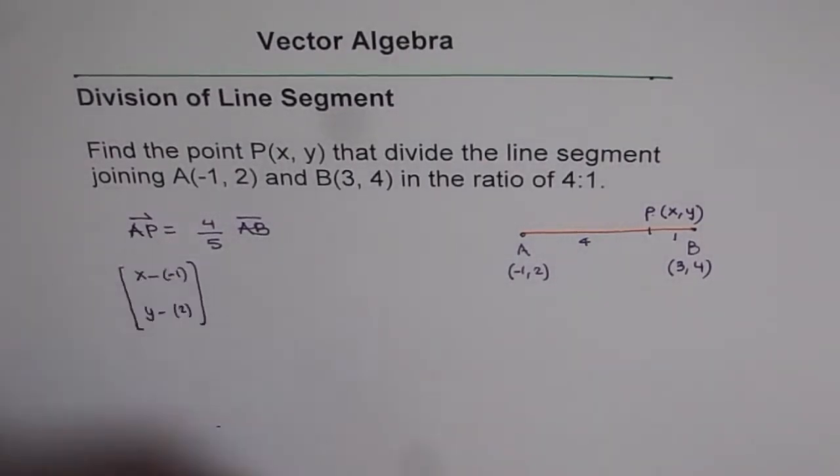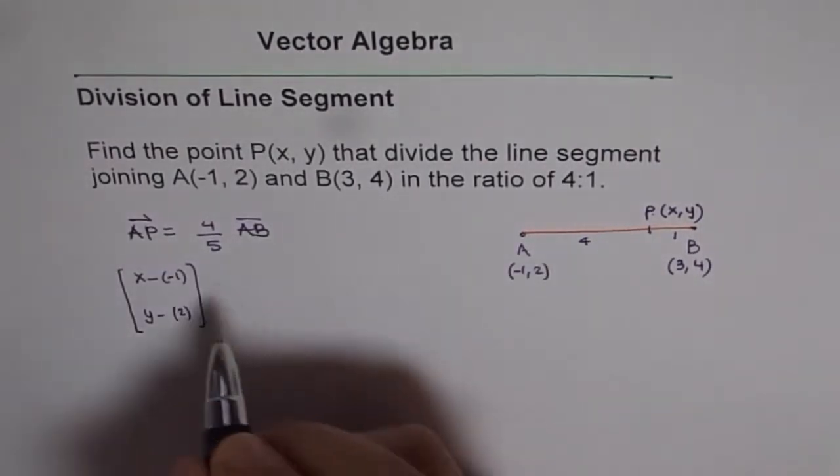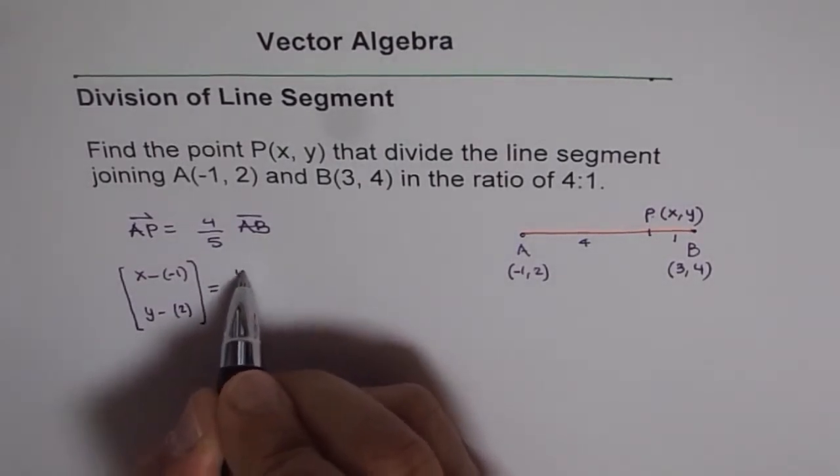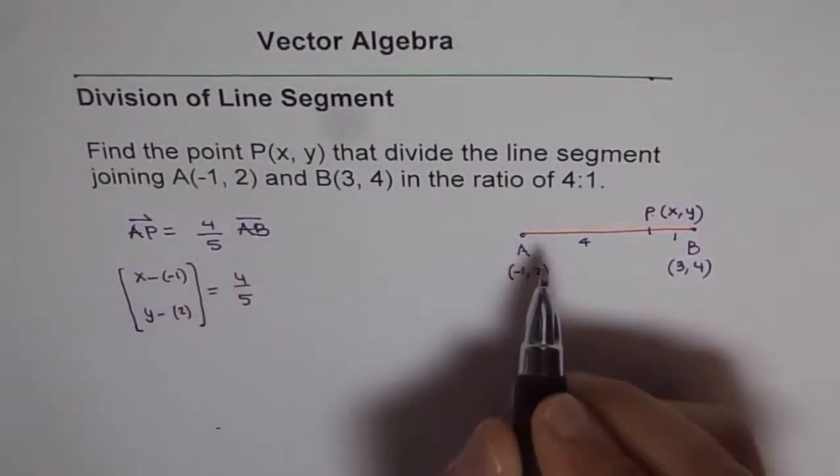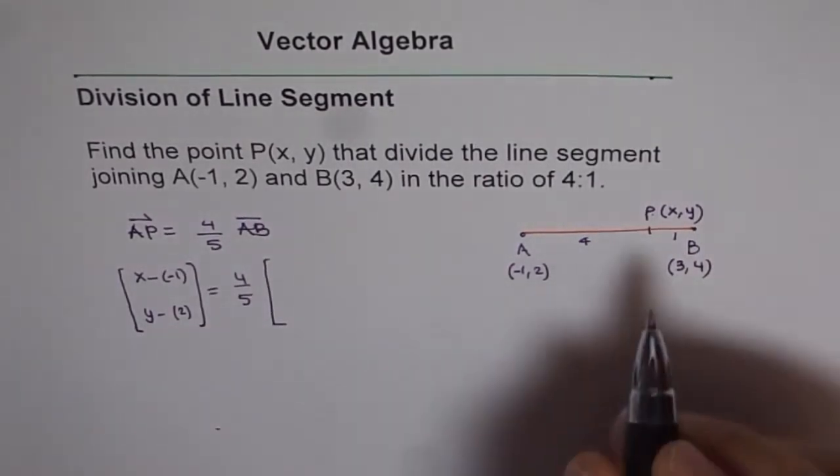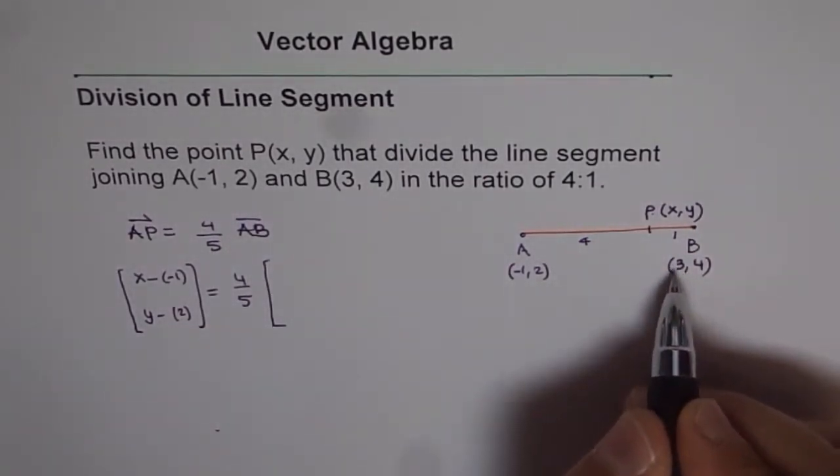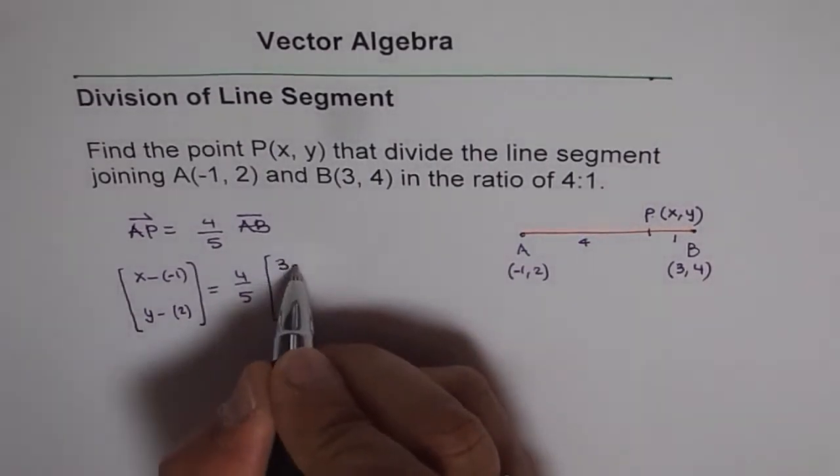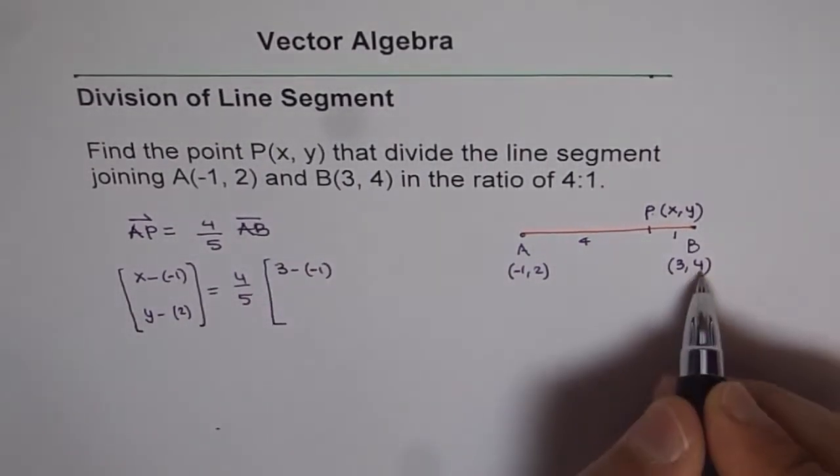So that is AP. And that is equals to 4 over 5 of AB. Now, what is AB? The vector AB for us is 3 minus minus 1, 4 minus 2.